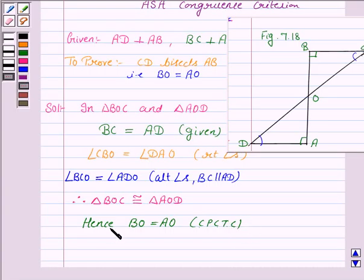Hence we have proved that CD bisects AB by proving that triangle BOC is congruent to triangle AOD by ASA criteria. Hence the result is proved. So this completes the question. Bye for now, take care. Hope you enjoyed the session.